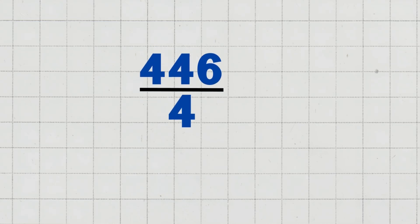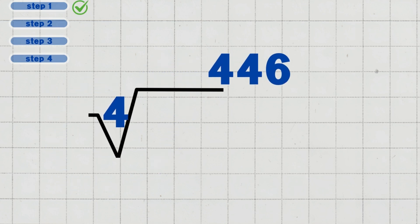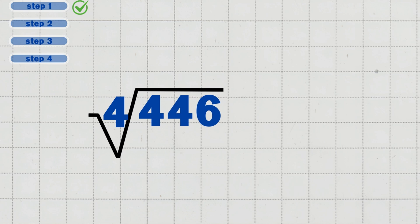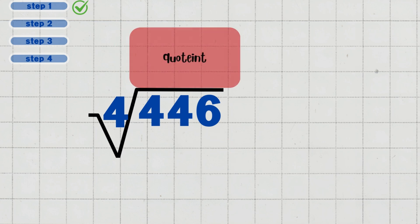Example one: let's solve four hundred and forty-six divided by four. Step one: set up the problem. Write four hundred and forty-six divided by four in long division form. Four is the divisor, the number we divide by. Four hundred and forty-six is the dividend, the number being divided. The answer we get is called the quotient.